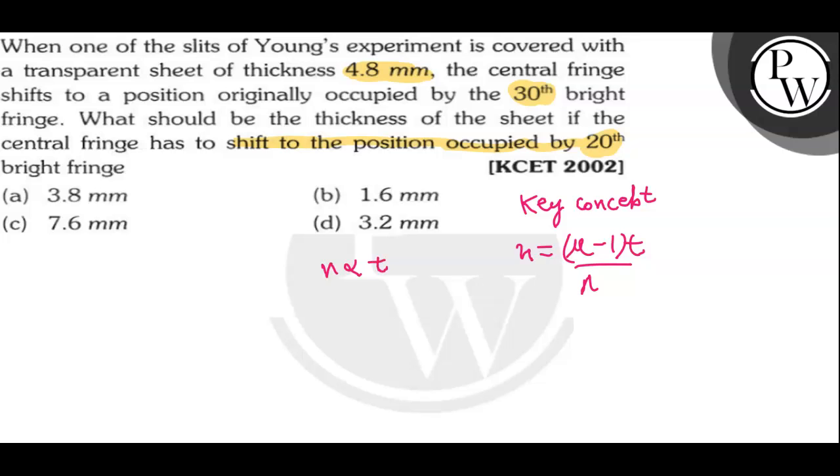Since the number of fringes shifted is directly proportional to t, we can write t2 by t1 equals n2 by n1. Now we have to find out the value of t2, the thickness of the second sheet. It can be written as n2 by n1 times t1.